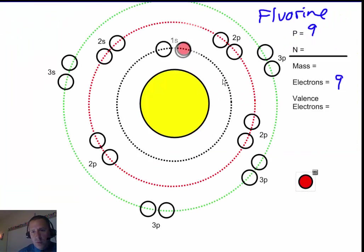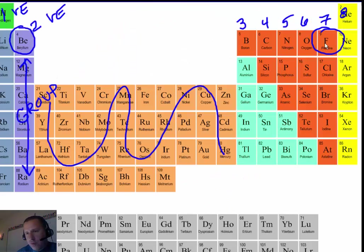Starting from the inside, one, two, three, four, five, six, seven, eight, nine. How many valence electrons does fluorine have? One, two, three, four, five, six, seven. Does that match what we figured out over here? It does. Fluorine has seven.